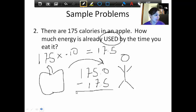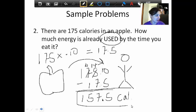175 minus 17.5. We add our decimal points, we'll subtract this out. I'm sure some of you can do this in your head, but I just like to show the work so you can see where this is all coming from.